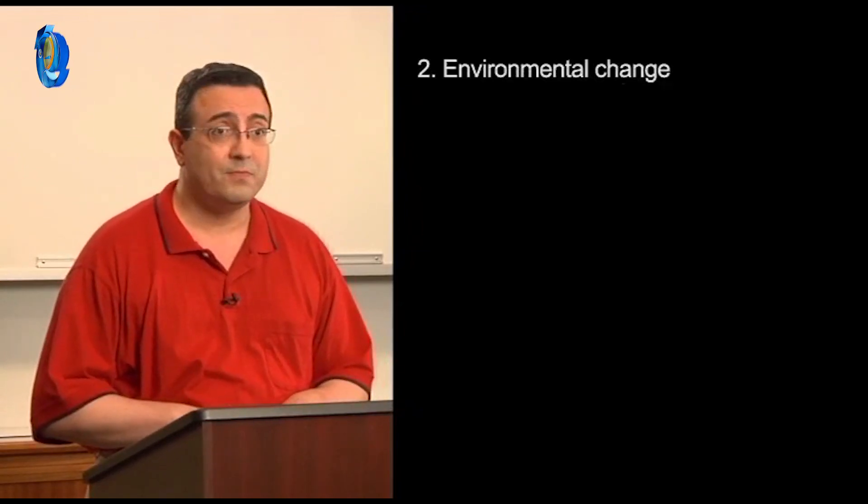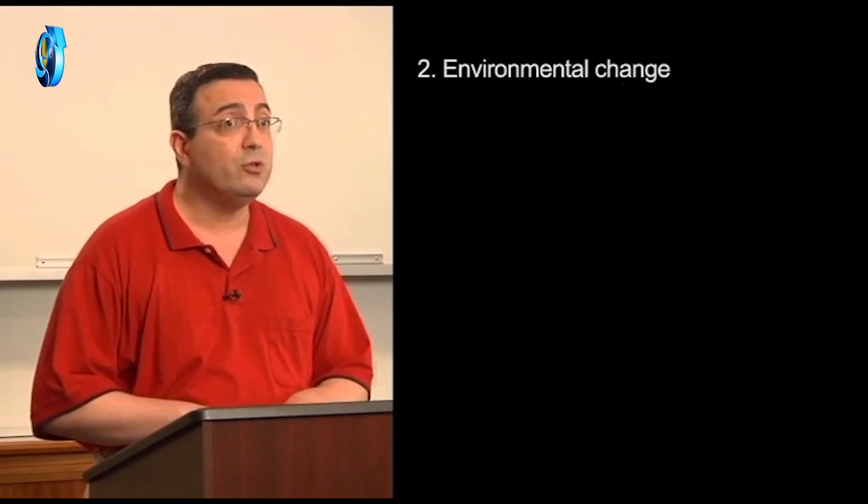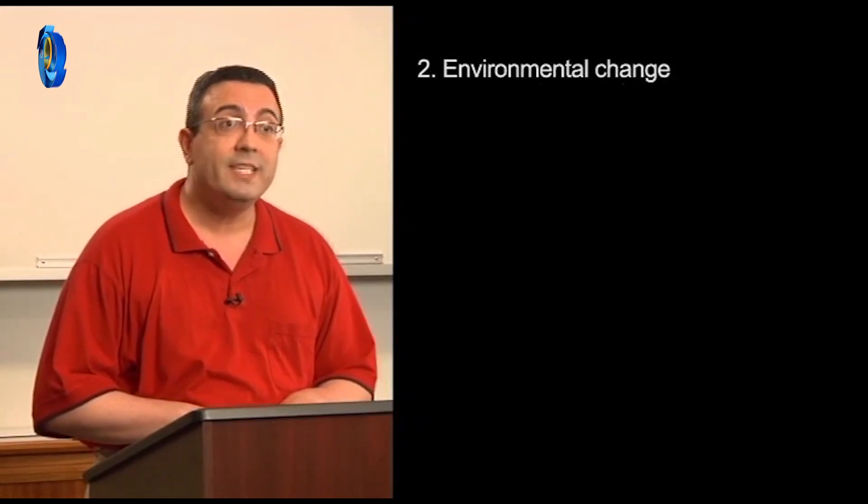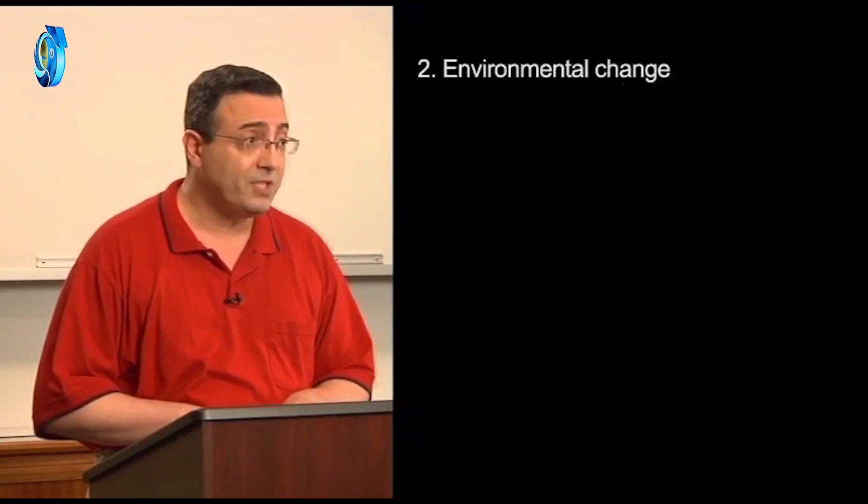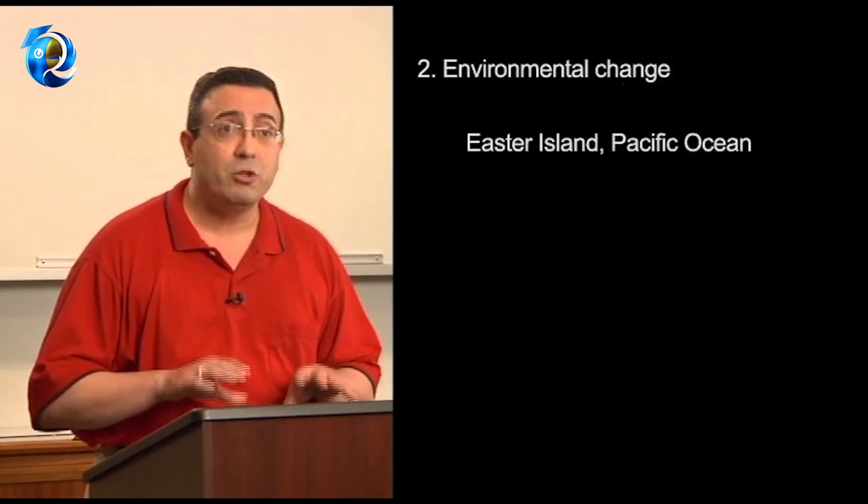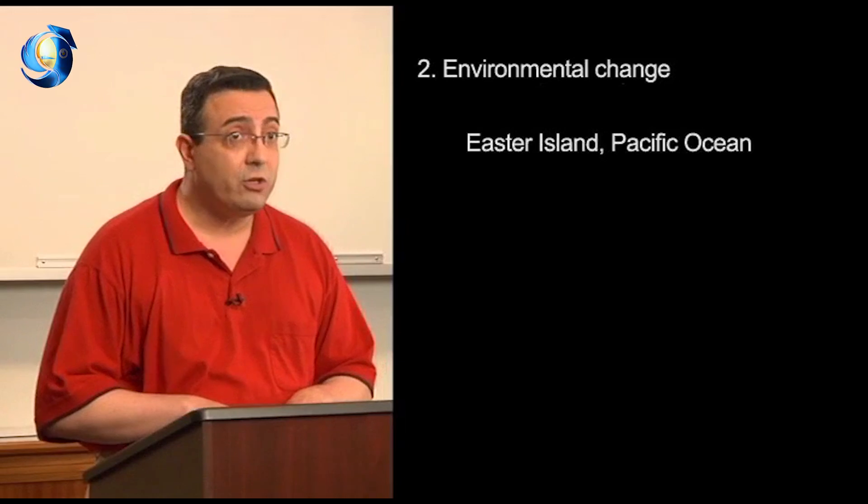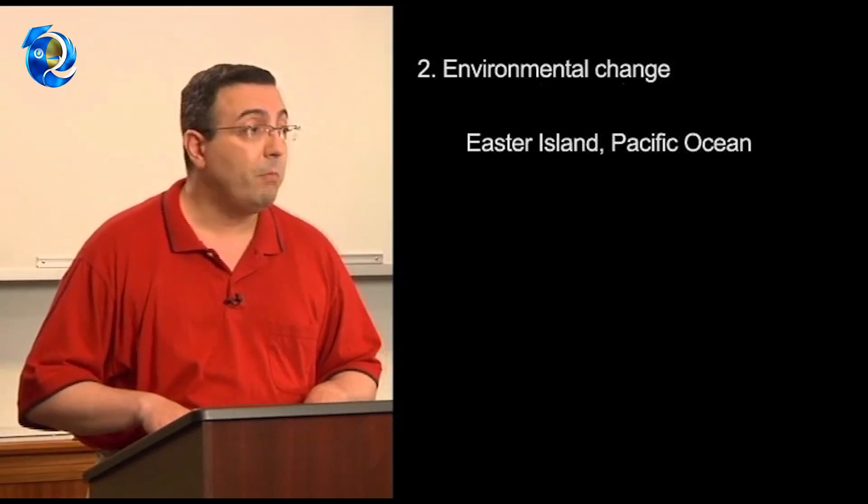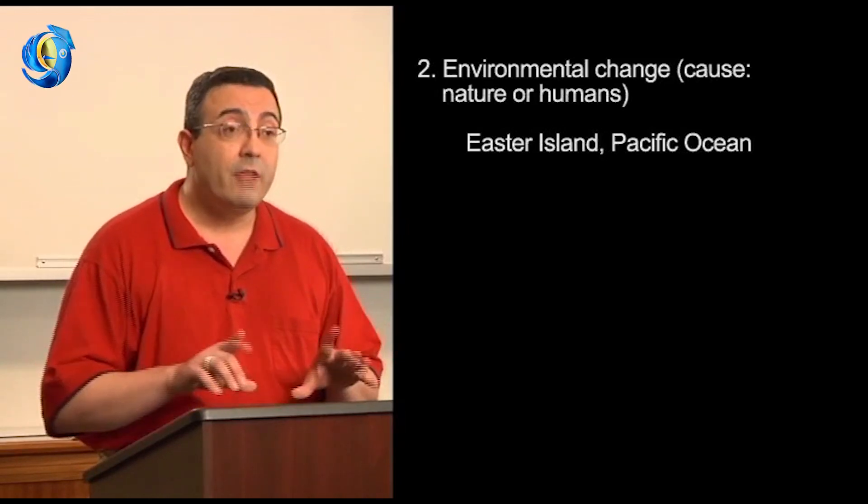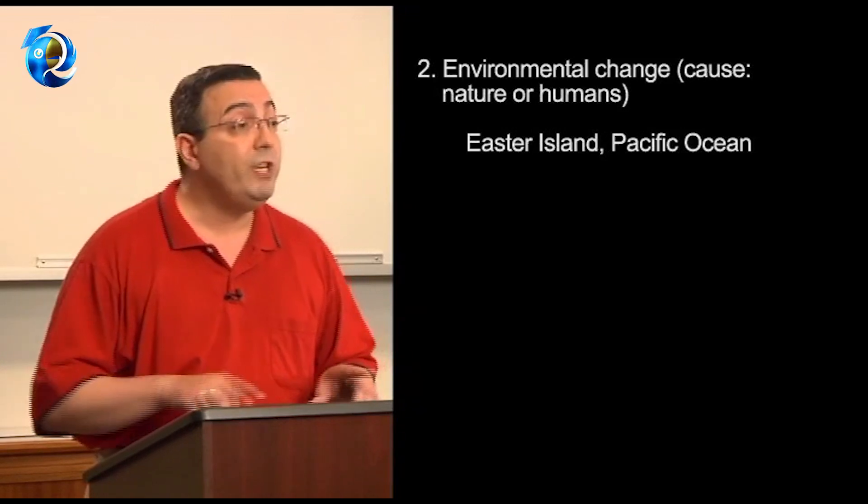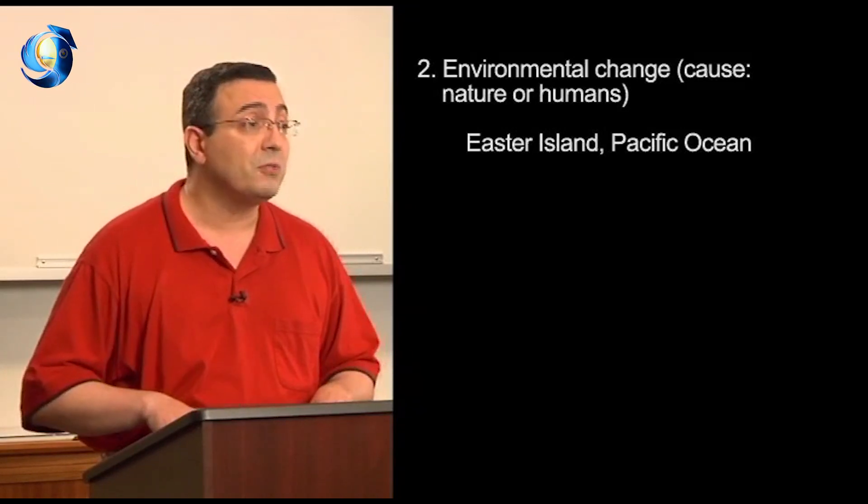Now, the second cause of societal collapse I want to discuss is environmental change. An example of collapse due to environmental change is Easter Island in the Pacific Ocean. Environmental change can be caused by nature or it can be caused by humans. In the case of Easter Island, research suggests it was caused by people.